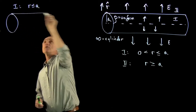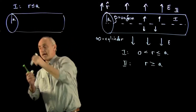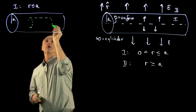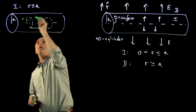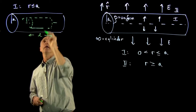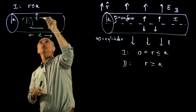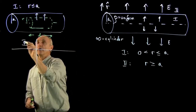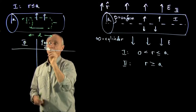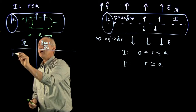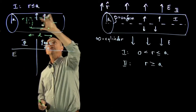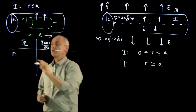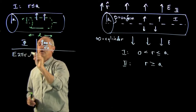We begin by looking at region one, for r less than or equal to a. We draw our source of radius a, and just like for a wire, I'm going to pick a Gaussian surface of radius r and length l. The flux will only be through the body of this surface, just like the wire. So our flux equals charge enclosed over epsilon naught, and the flux is the electric field times the area — circumference 2πr times l.